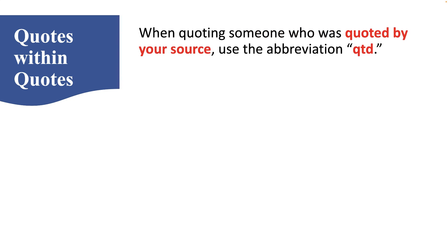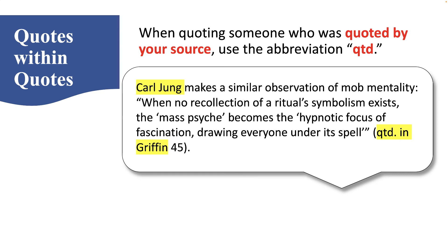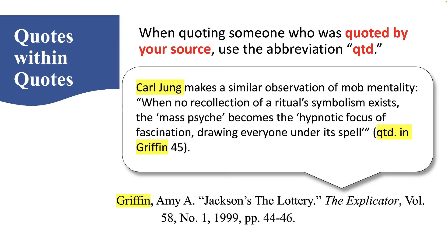When quoting someone who was quoted by your source, you need to use the abbreviation 'qtd. in.' For example: Carl Jung makes a similar observation of mob mentality, and we have a quote from Carl Jung. But we didn't read anything actually written by Carl Jung — we found this quote in a source by Amy Griffin, who wrote an article called 'Jackson's The Lottery.' So in our parenthetical citation, we write 'qtd. in Griffin' — 'qtd.' is an abbreviation for 'quoted.' This makes it clear we found the quote in Griffin's source, pointing the reader to the Works Cited entry that begins with her last name.